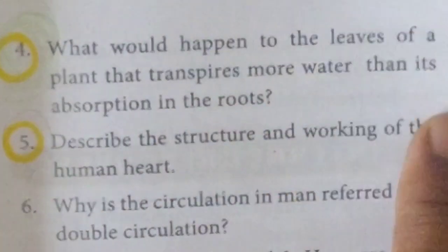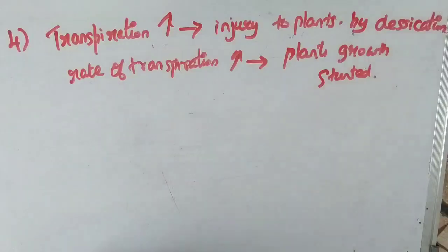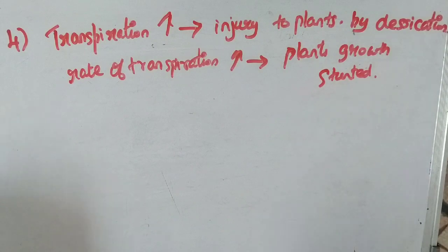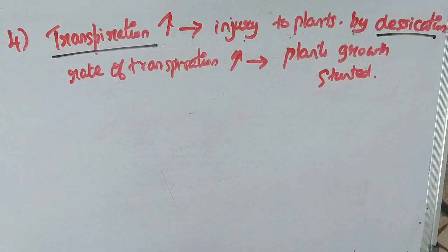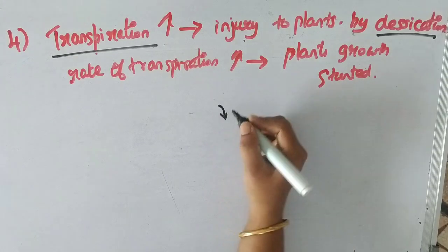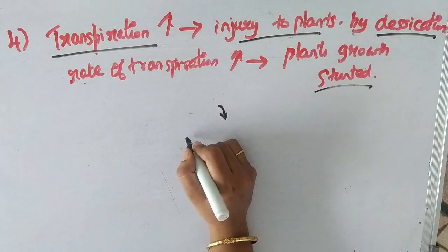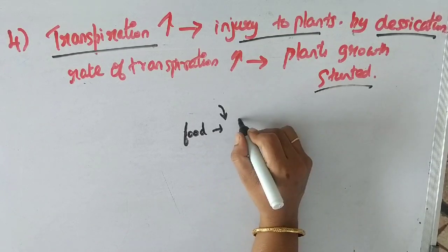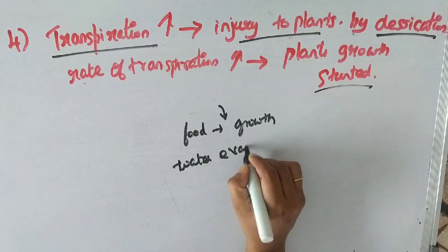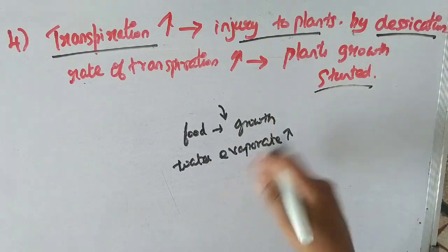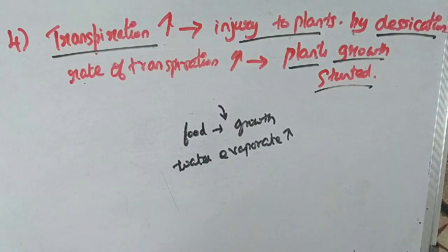Question 4: What would happen to the leaf of a plant that transpires more water than it absorbs through the root? When the leaf is stabilized, the plant becomes preserved. If the rate of transpiration is too high, growth is stunted and the plant would suffer damage and reduced food production.